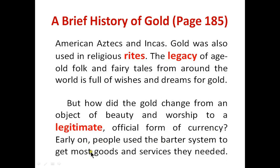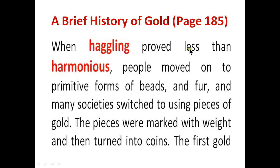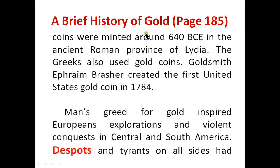Early on, people used the barter system to get most goods and services they needed. When bartering proved less than harmonious, people moved on to primitive forms such as beads and fur. Many societies then switched to using pieces of gold. The pieces were marked with weight and turned into coins. The first gold coins were minted around 640 BCE in the ancient province of Lydia. The Greeks also used gold coins.